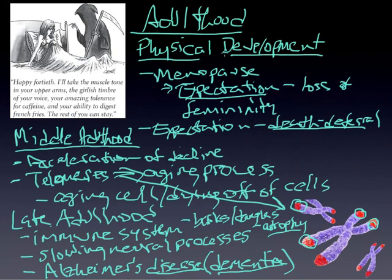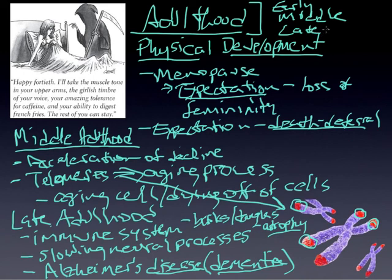Those are a few of the highlights when it comes to talking about just physical development itself during adulthood. But remember, when we talk about adulthood, we're not talking about a uniform period of time. We're talking about early adulthood, middle, and late, and each one has different characteristics that are part of the overall picture that we refer to as adulthood.